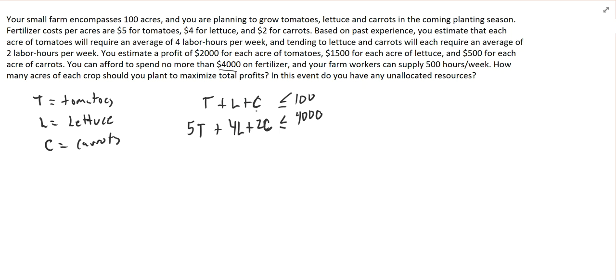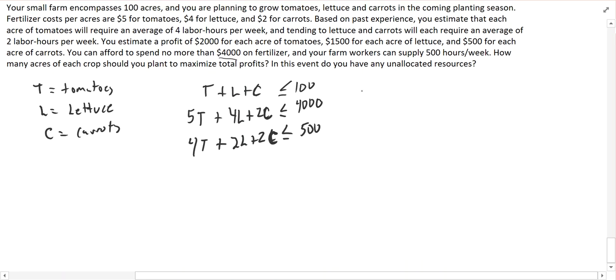And the last thing we have are labor hours. We spend 4 hours per week tending tomatoes, so every acre is going to require 4 hours of labor. And lettuce and carrots will each require an average of 2. So 2L plus 2C, and we have up to 500 hours per week of labor available. And our goal is to maximize P equals $2,000 per acre of tomatoes plus 1,500 times L plus 500 times C.